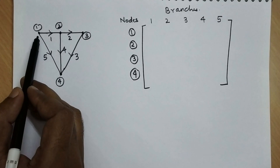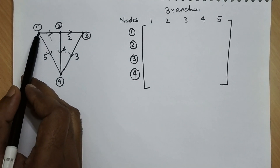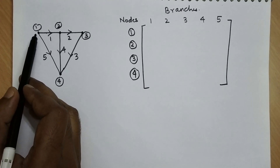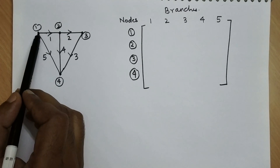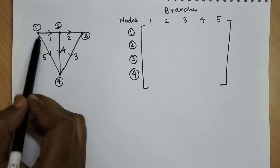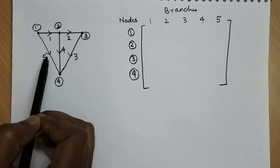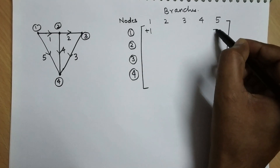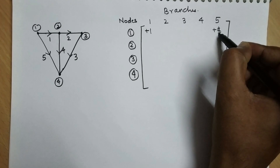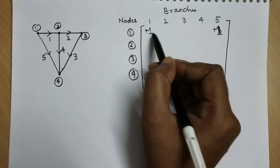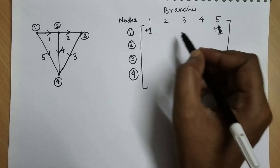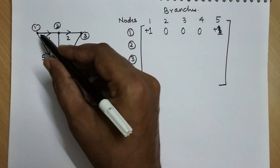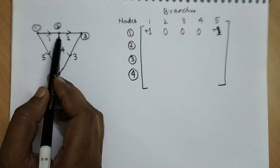We look at each node to determine how many branches are connected and whether each is incoming or outgoing. For node one, the first row: branch one is outgoing and branch five is outgoing. An outgoing branch is considered as plus one, so we write plus one at branch one and plus one at branch five. Branches two, three, and four are not connected to node one, so they become zero.